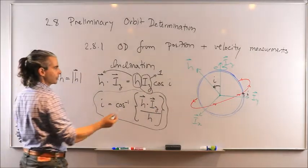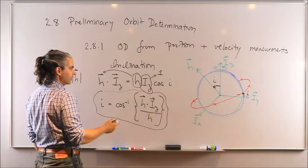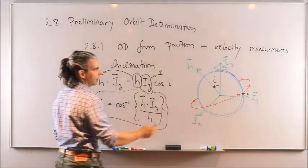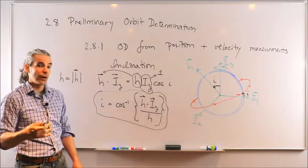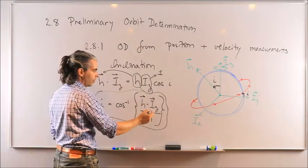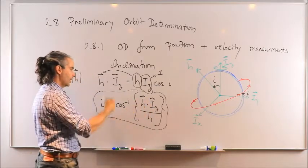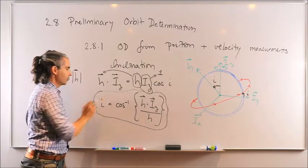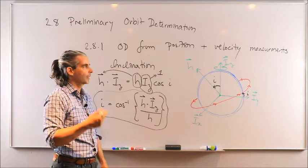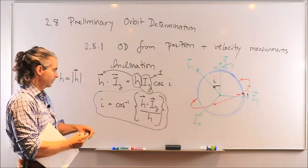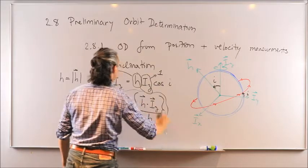We have everything we need to calculate the third orbital element from R and V vectors, since h was computed previously and i_z components are known. With h as the norm of the h vector, the inclination calculation is straightforward. That's it for inclination.